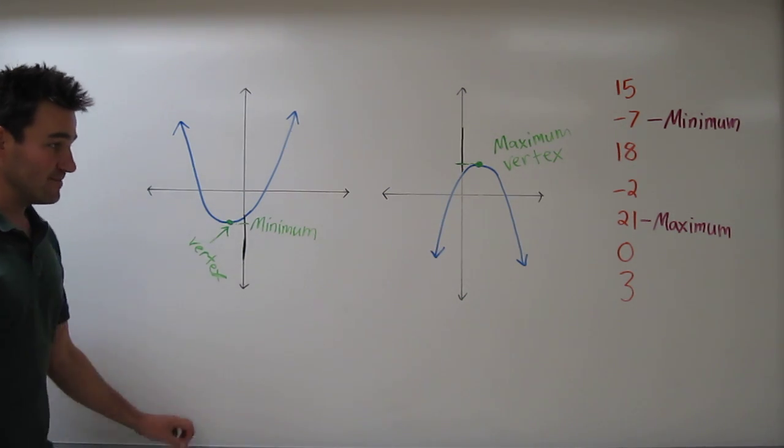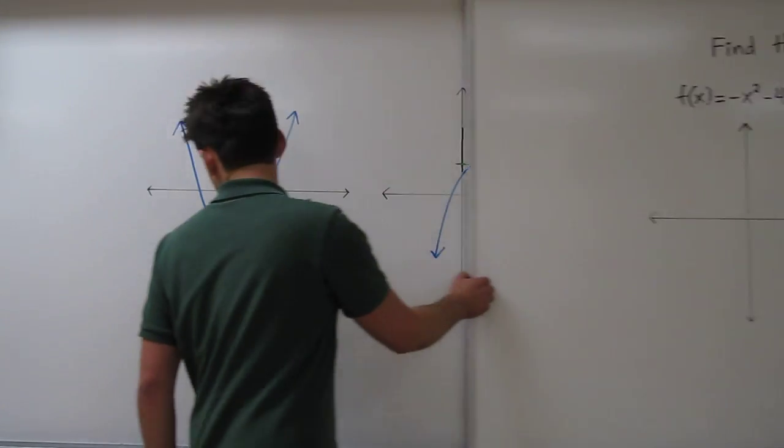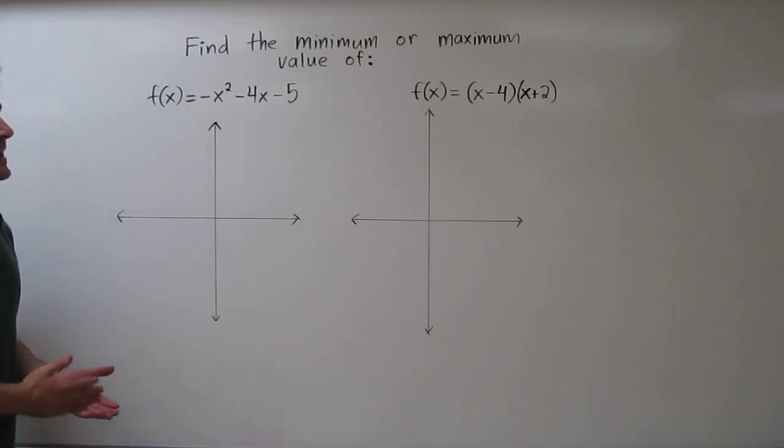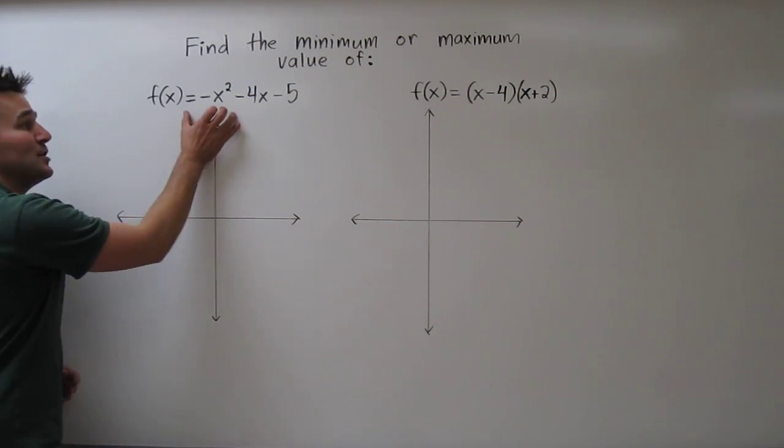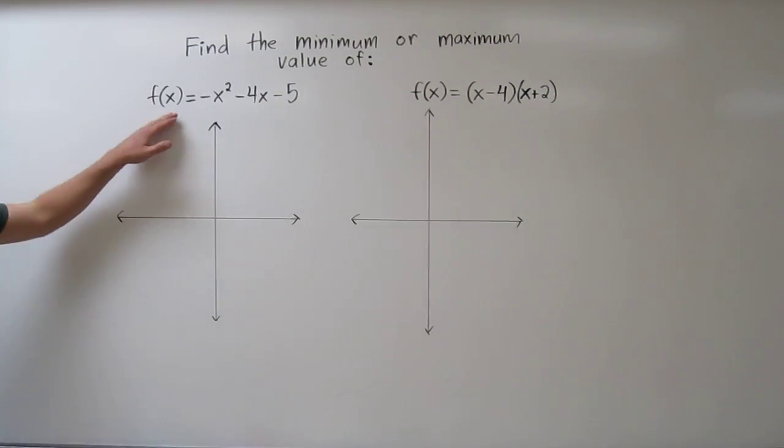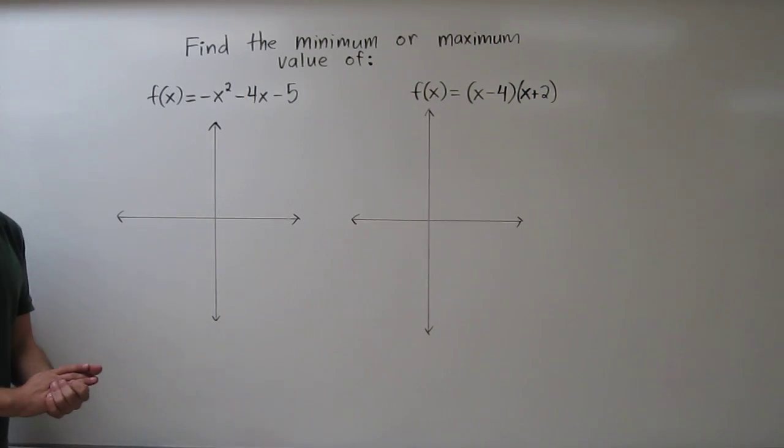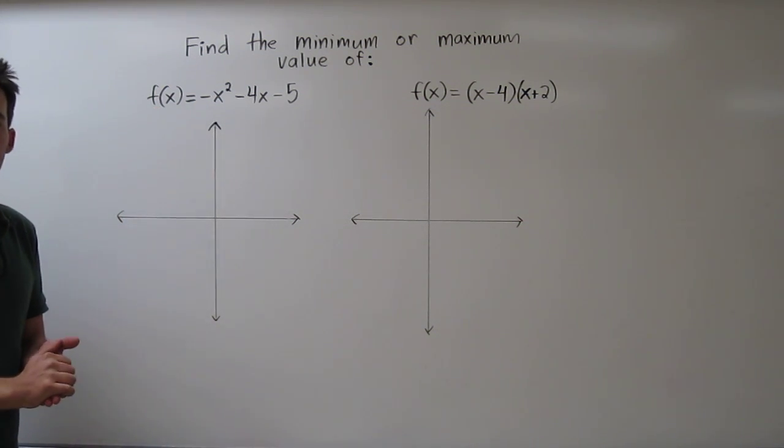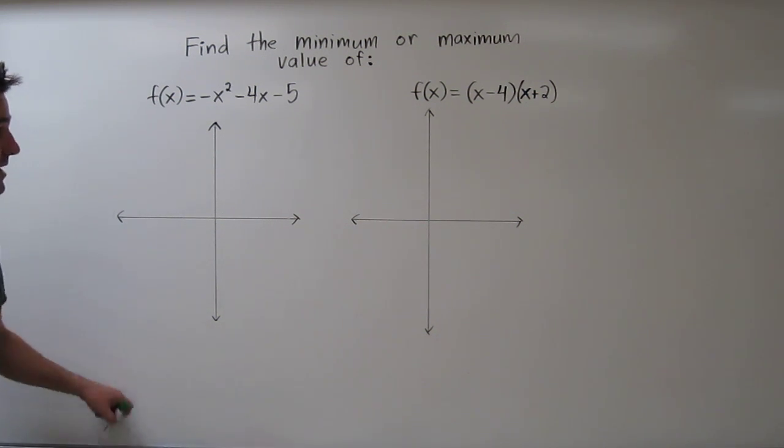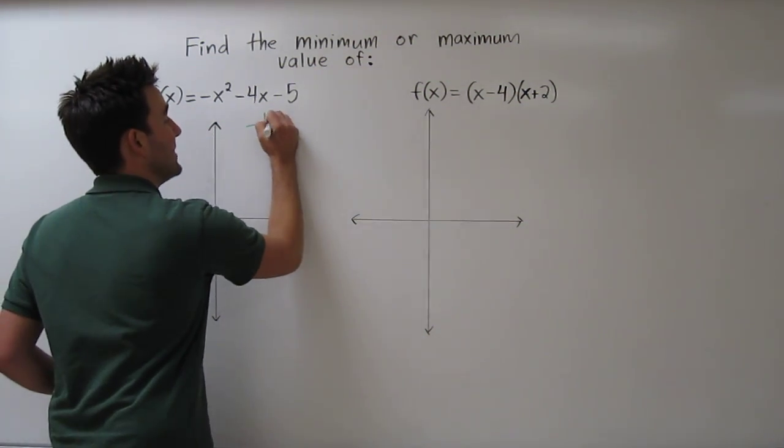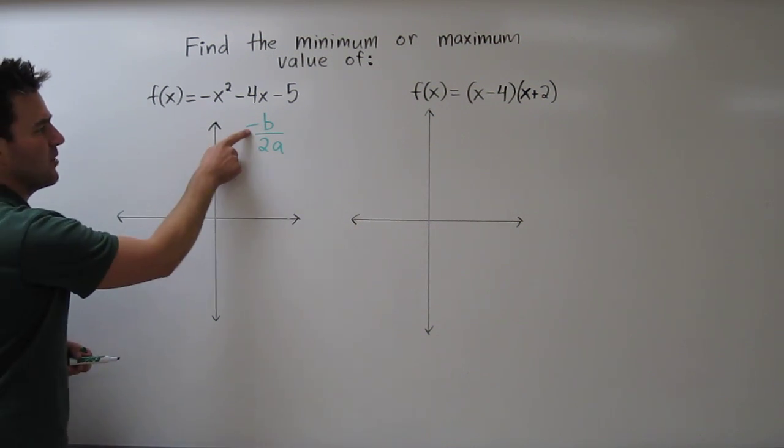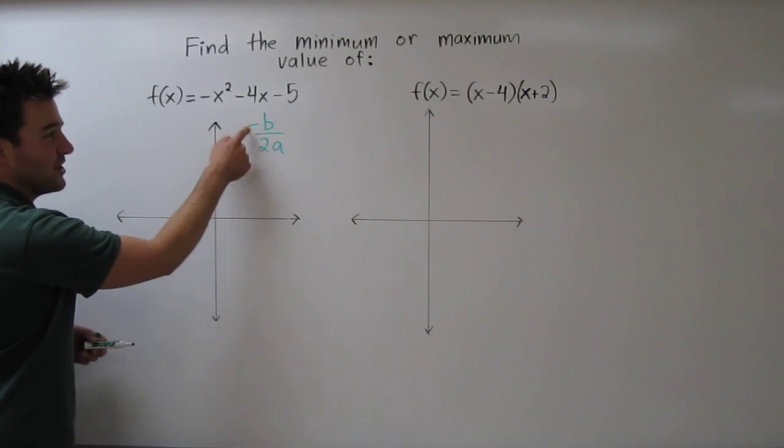So let's try doing this with a few examples. Our instructions are to find the minimum or maximum value of two different parabolas. This first parabola is in standard form. That is, we have a function in ax squared plus bx plus c form. And if you remember, standard form, we can find the vertex of the function by first finding what negative b over 2a is.